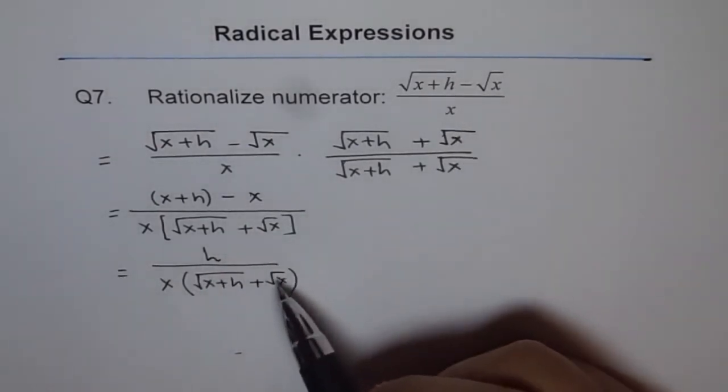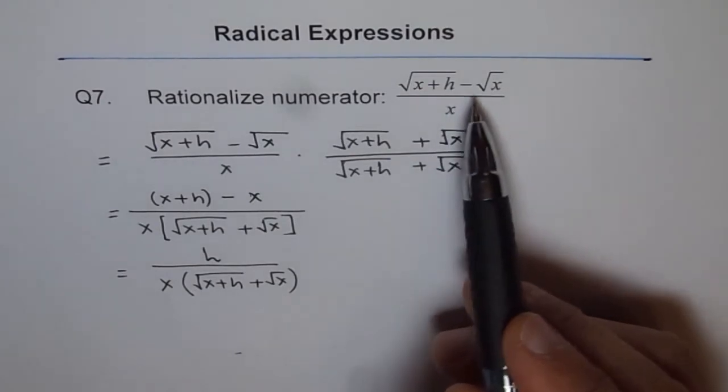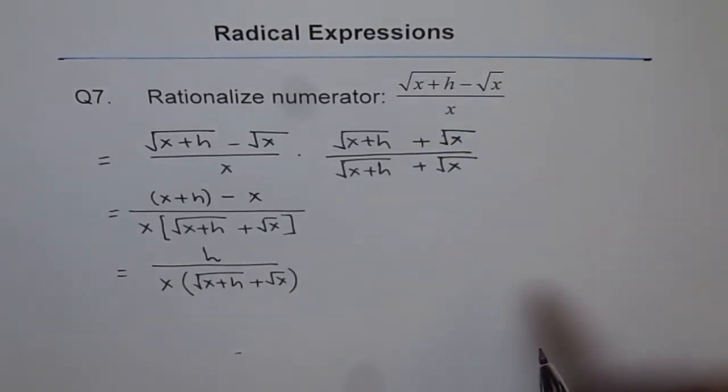And see, by rationalizing, what we have done is we have removed the radical from the numerator. So that is how it helps. It helps to simplify the numerator when we rationalize numerator. So that is the process. Thank you.